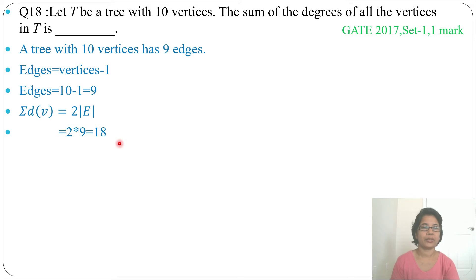So here answer will be 18. Just you need to remember that in a tree if there are n vertices then n minus 1 edges, and sum of all degree equal to 2 into edges. If you remember these two formulas you can easily solve. So answer is 18. Thank you.